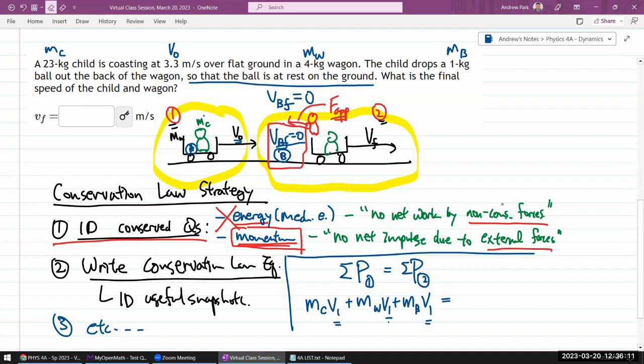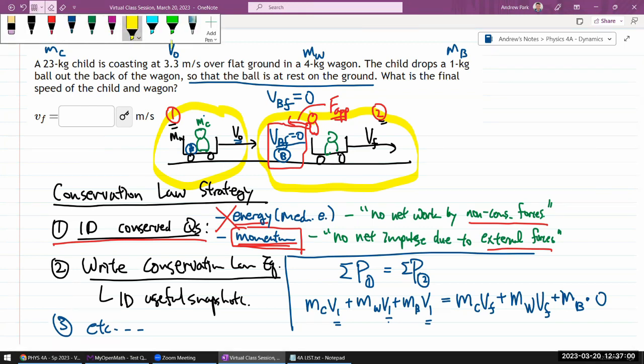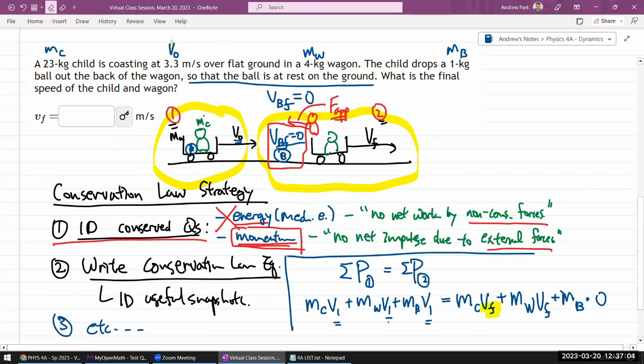And since total momentum is conserved, the total momentum in snapshot two must be the momentum of the child in that snapshot plus the momentum of the wagon in that snapshot, with final same speed for child and the wagon, plus momentum of the ball in the snapshot, which according to the information given is going to be zero, zero velocity, at rest on the ground. So it's a weird setup but that's what the question is telling us, so we'll go with that. So all the masses I believe are given. V1 was given. So the only quantity that wasn't given that we have to solve for is V final, and we have one equation, one unknown, so it should be solvable.